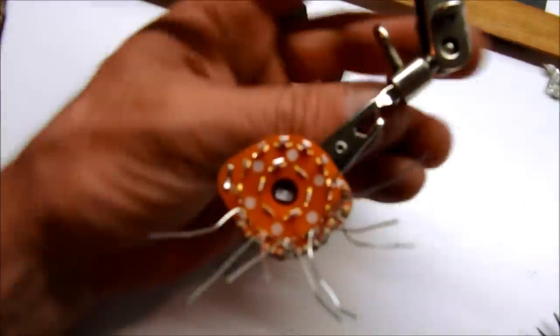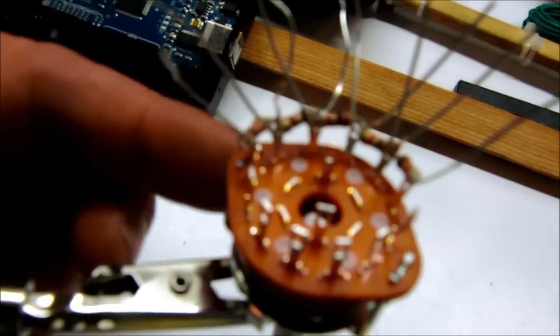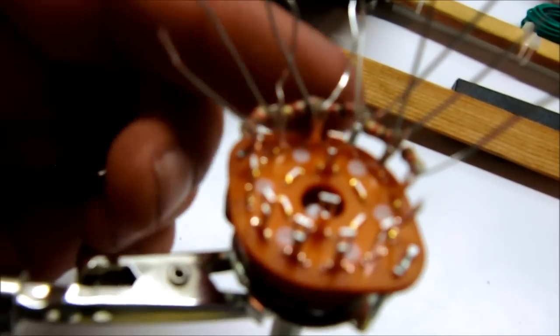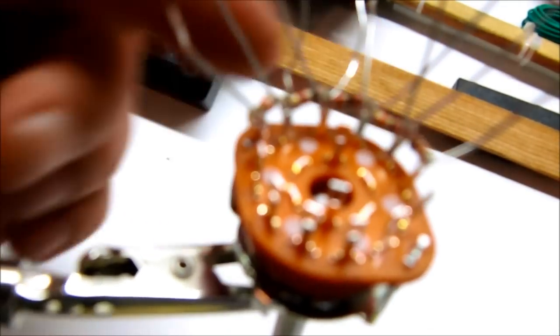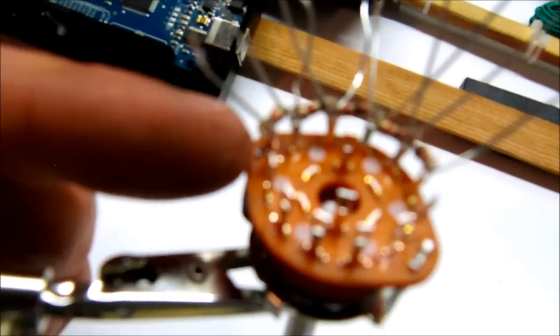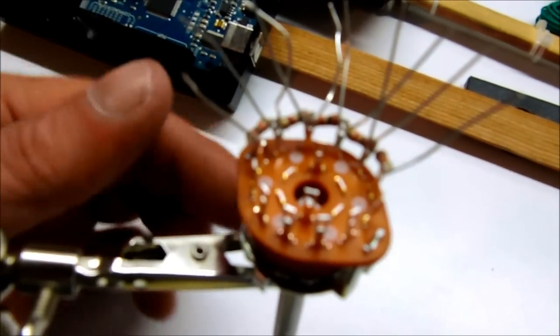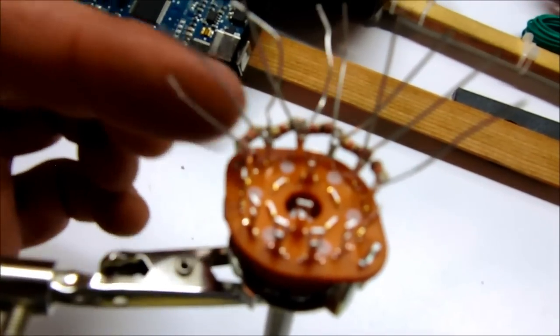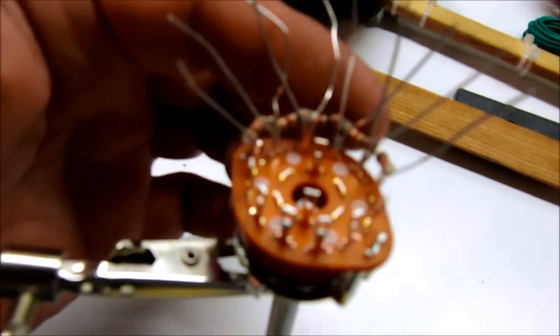Okay, so basically what I've done here is run each resistor in between each position. So what's going to happen is when we use this switch, we'll be adding a resistor for each position of the switch.